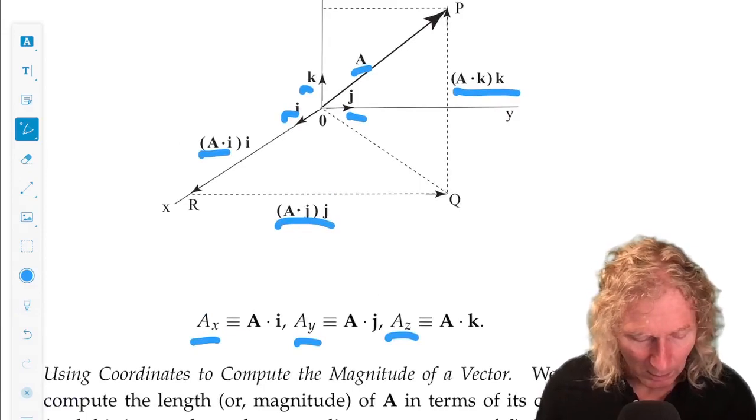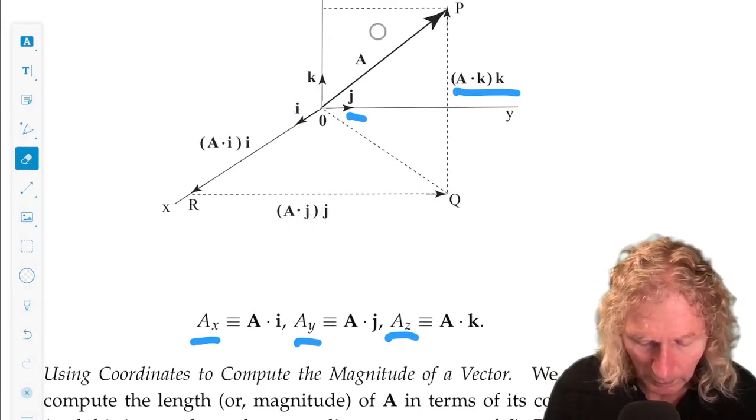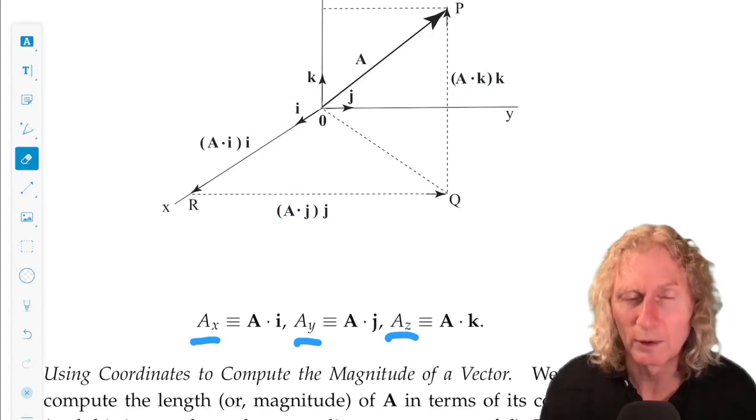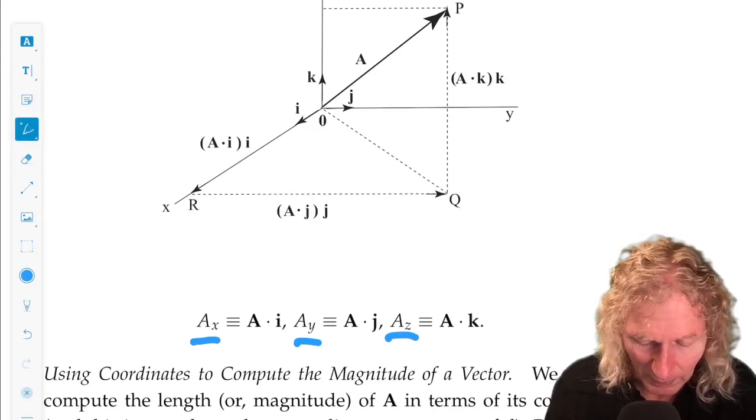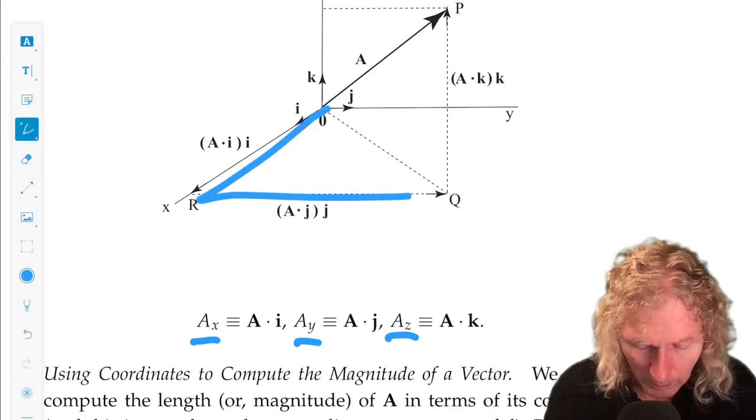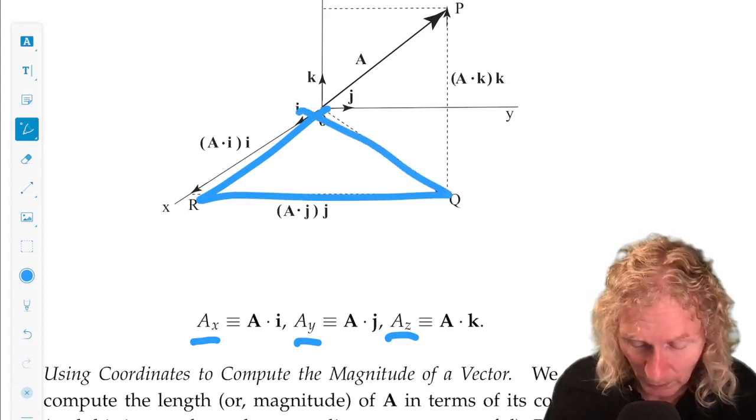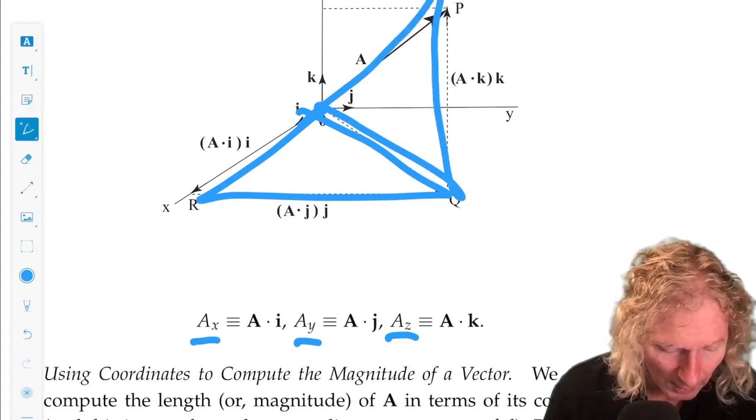In this diagram here, I'm not going to go through this in great detail. It's a useful exercise for you, but we see two right triangles. There's one there. Convince yourself that it's a right triangle, and one here.